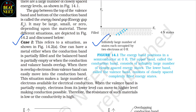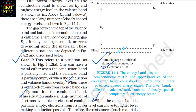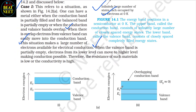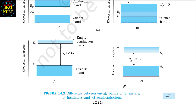Case 1 (figure 14.2a): One can have a metal either when the conduction band is partially filled and the valence band is partially empty, or when the conduction and valence bands overlap. When there is overlap, electrons from the valence band can easily move into the conduction band, making a large number of electrons available for electrical conduction. When the valence band is partially empty, electrons from its lower levels can move to higher levels making conduction possible. Therefore the resistance of such materials is low or the conductivity is high.